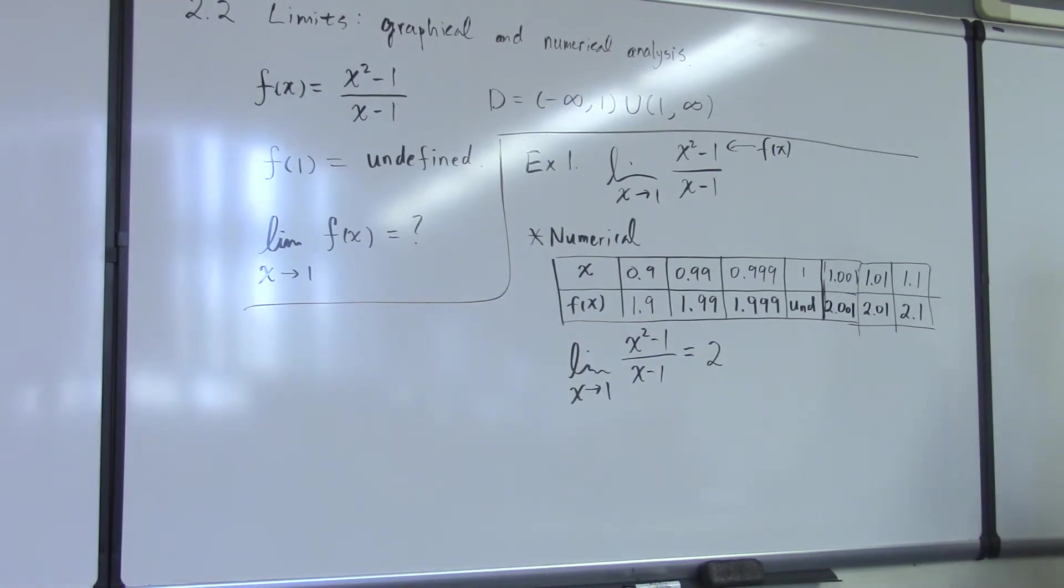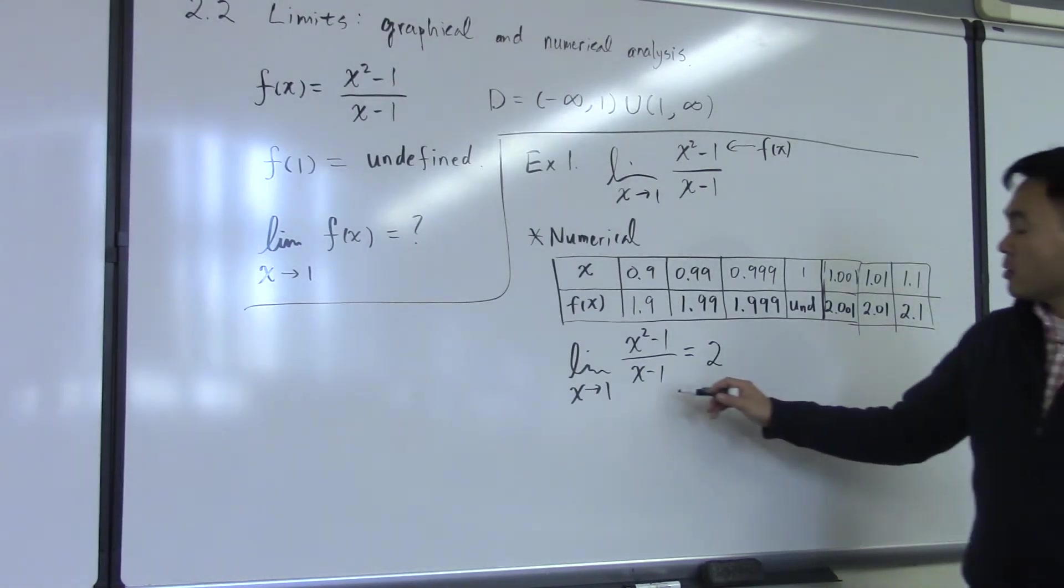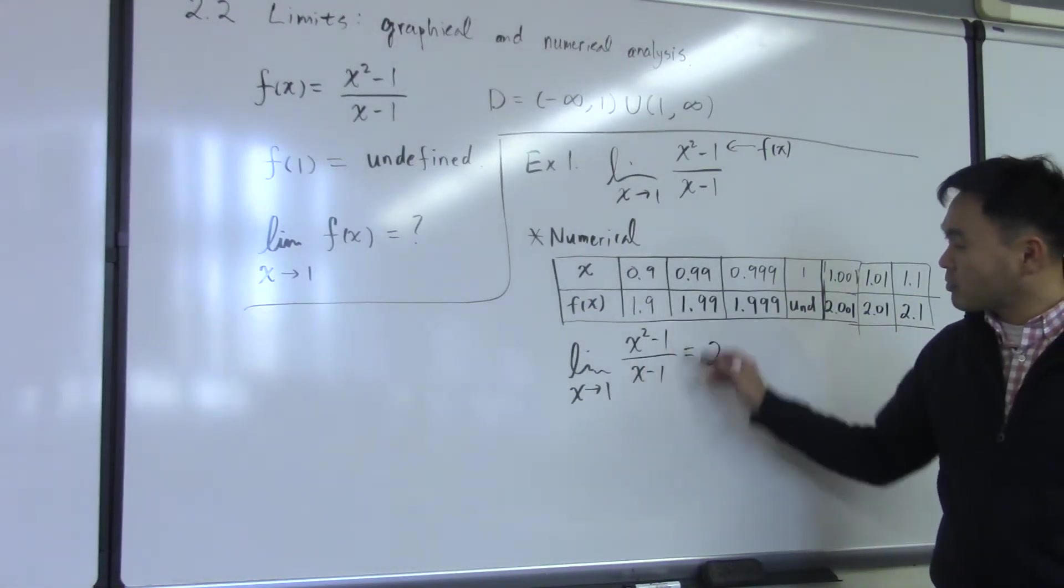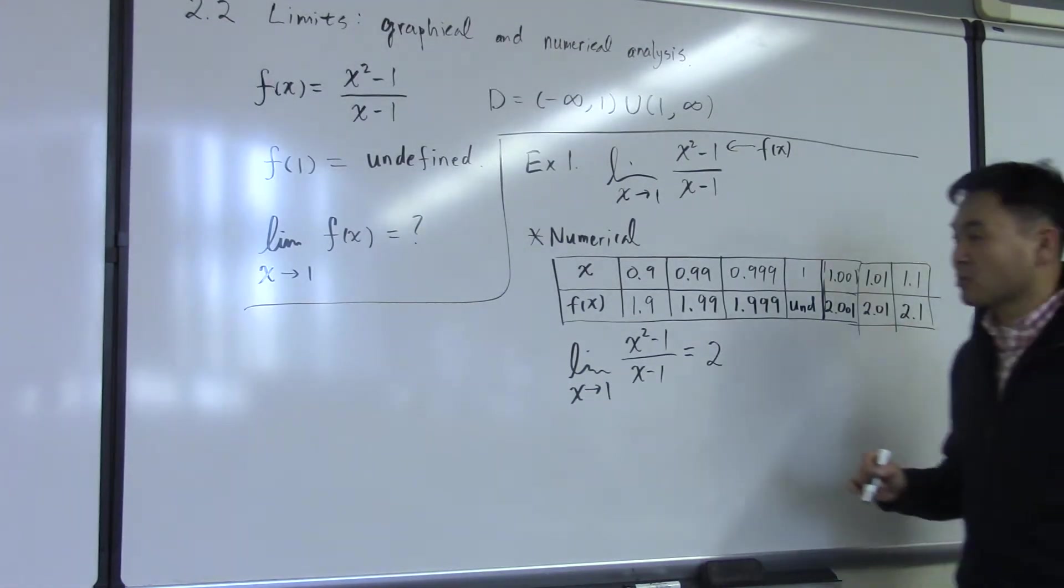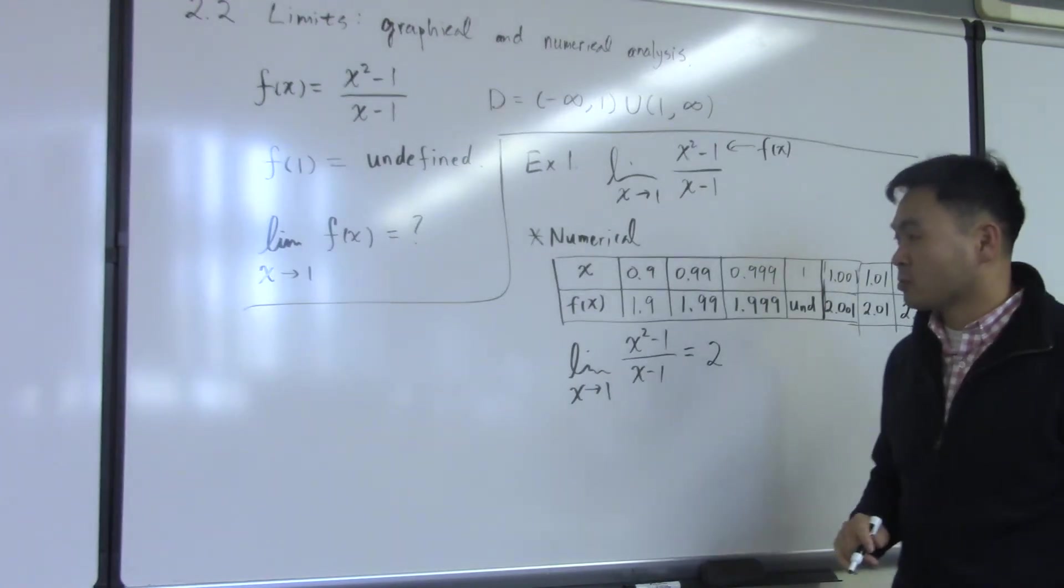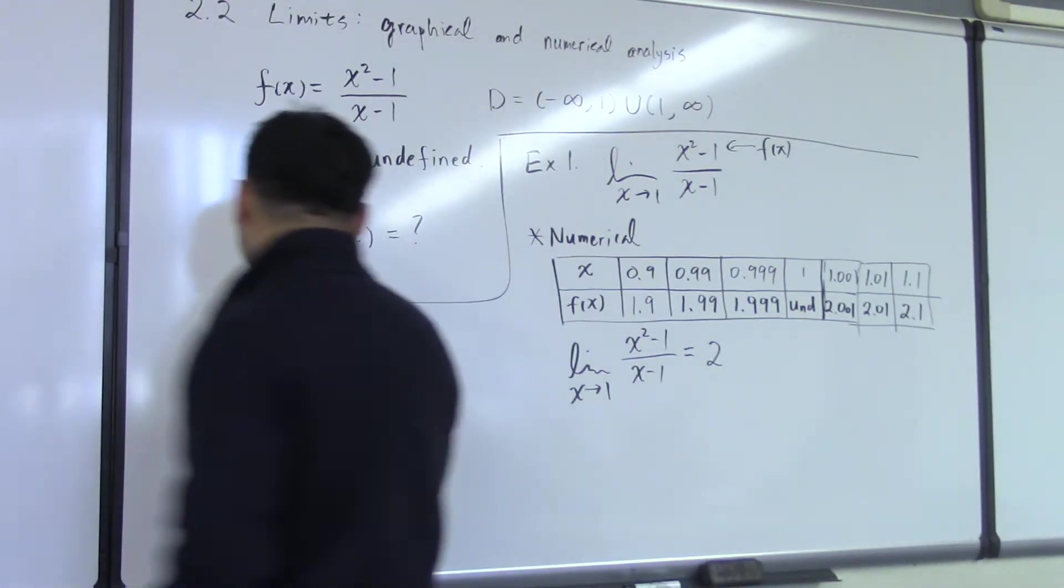Now let's think about the graph of this function. And then maybe that's going to give us another viewpoint of why it has to be this way.